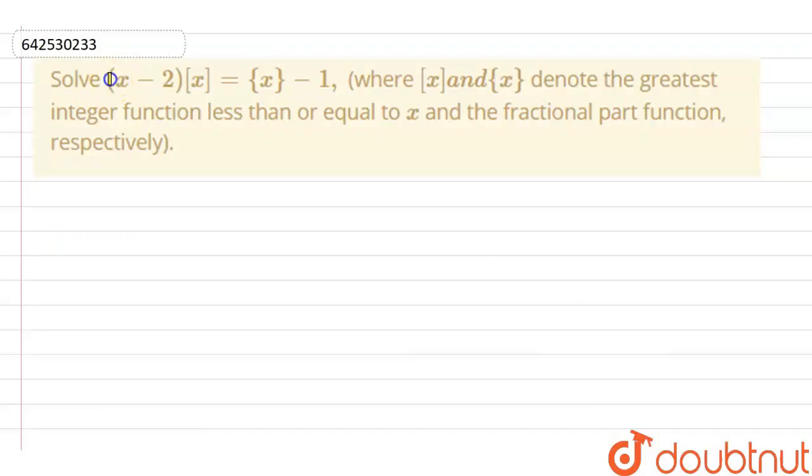Hello everyone, in this question we need to solve x minus 2 multiplied by greatest integer x equals to fractional part x minus 1.